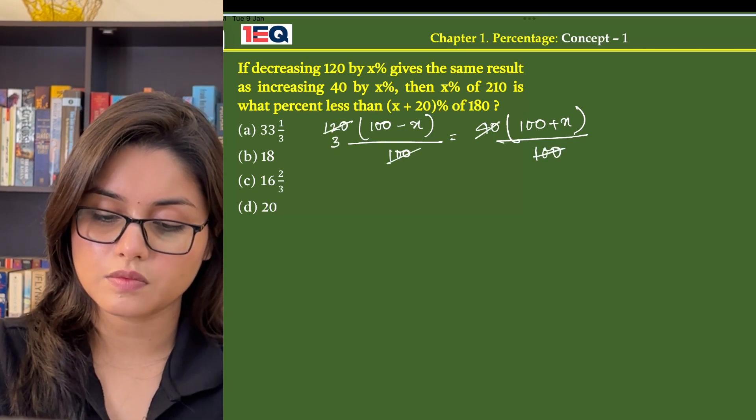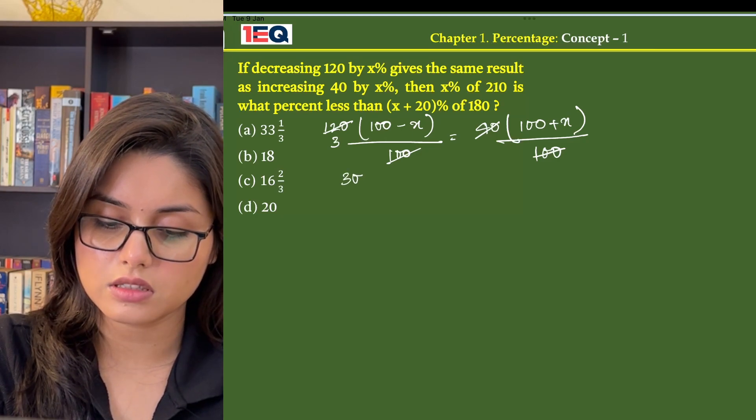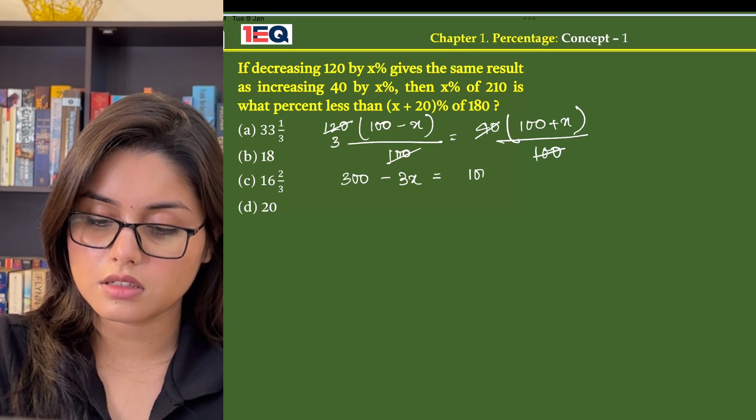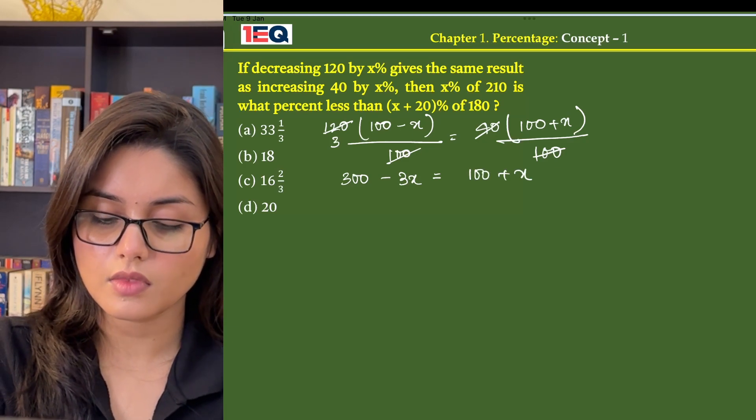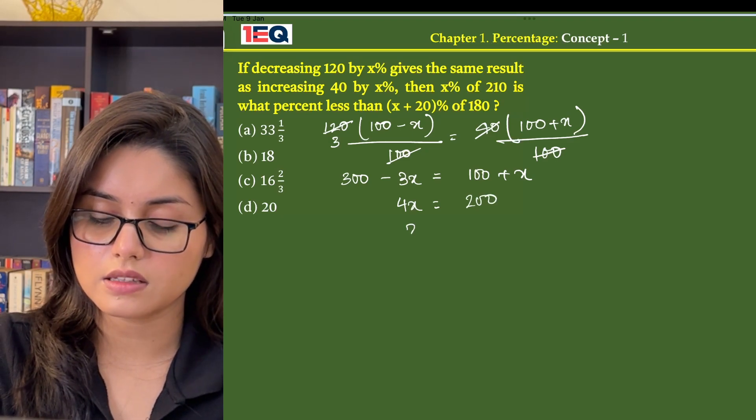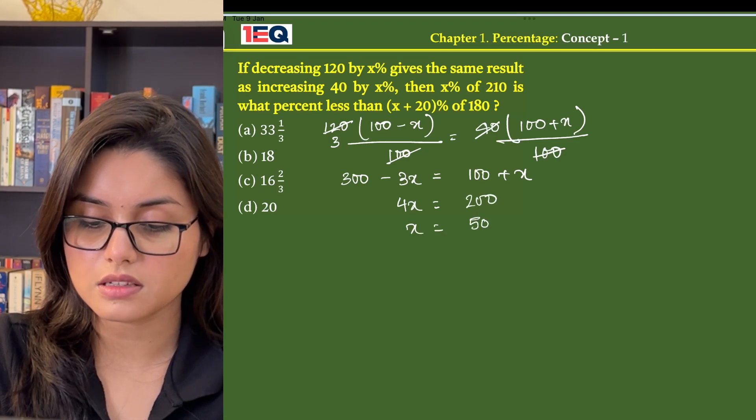so we get 300 - 3x = 100 + x. From here, 4x will be equal to 200, so x is equal to 50 percent.